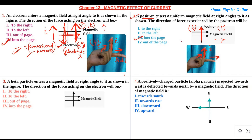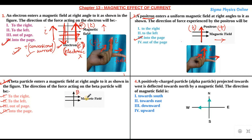I hope you are clear with the second answer. Let's go to the third question. A beta particle enters a magnetic field at right angles to it as shown in the figure. The direction of force acting on the beta particle will be to the right, left, out of the page, or into the page. Here the beta particle is moving upwards, perpendicular to the magnetic field, and the magnetic field is going from left to right.